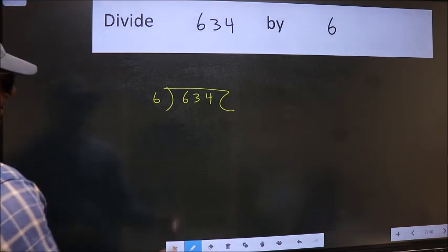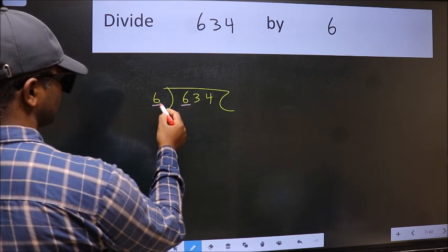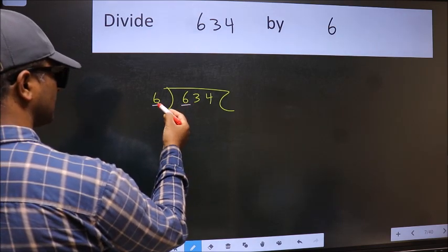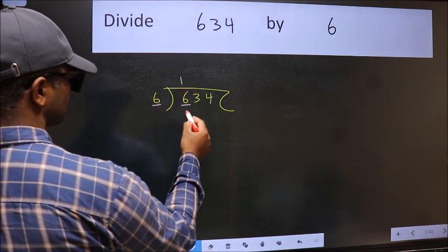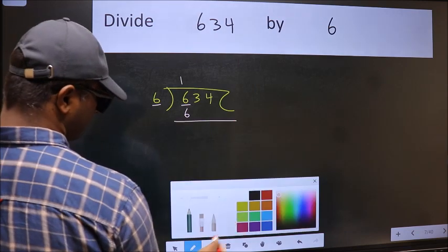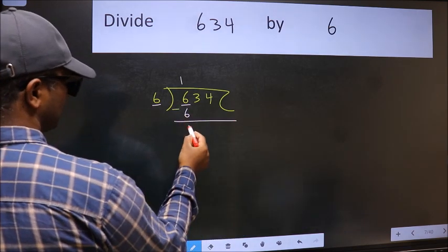Next, here we have 6 and 6 here. When do we get 6 in the 6 table? 6 times 1 is 6. Now we should subtract. We get 0.